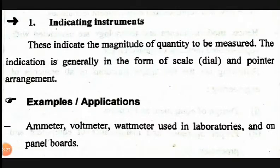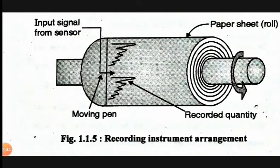As an example application, to measure current we use the ammeter. The indicating instrument indicates the magnitude of the quantity to be measured. The indication is generally in the form of a scale, dial, and pointer arrangement. Now we will see the next one, that is the recording instrument.